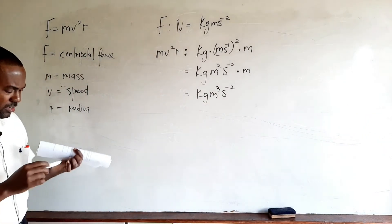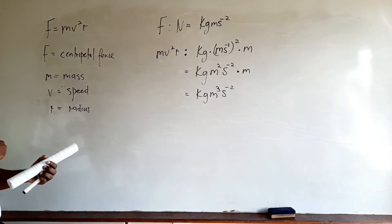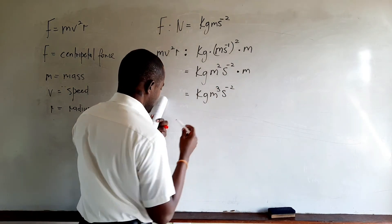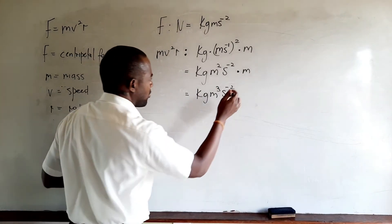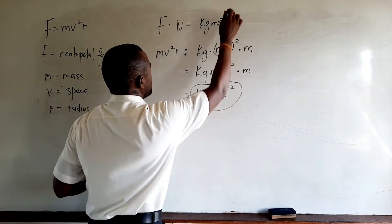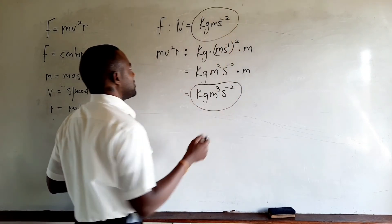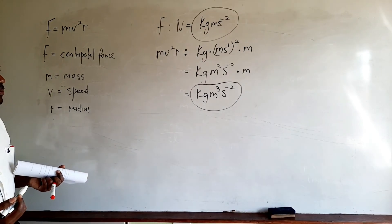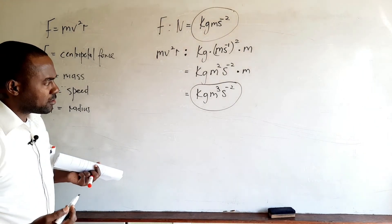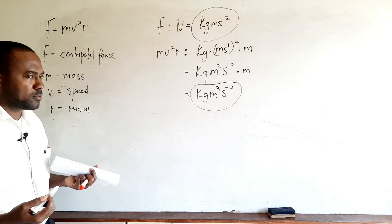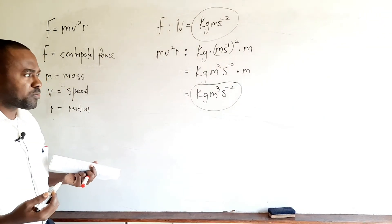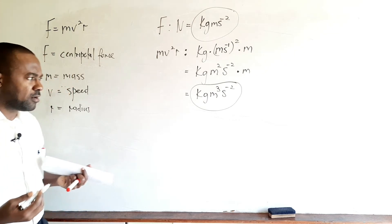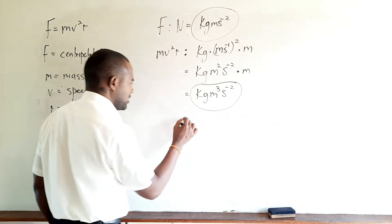Now that we've expressed the right-hand side term in base units, we compare. The base units of F on the left are kilogram meter per second squared, whereas the base unit equivalent of MV squared R on the right is kilogram meter cubed per second squared. Clearly these base units are not identical, and therefore the equation is not homogeneous.